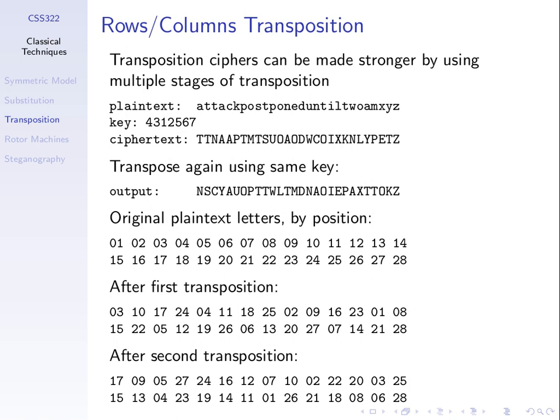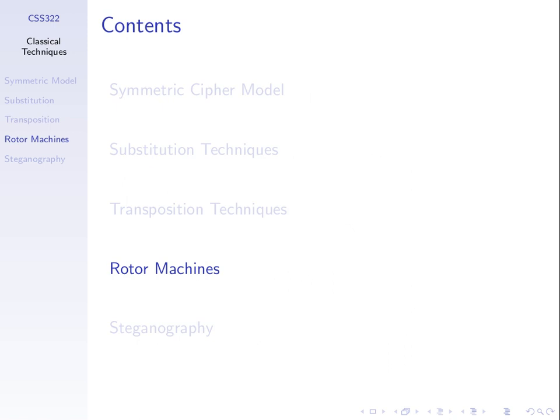That finishes our topic effectively. Next week we'll cover just a brief example on steganography, and then we'll move on to real ciphers where we'll see these same concepts — transpositions, substitutions, combination of the two — repeated. Thank you.